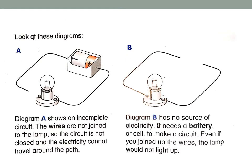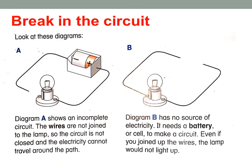Look at this diagram. In picture A, I have a battery, wire, and light bulb, but the light bulb cannot light. Because there is a break in the circuit — the wire is cut in picture A. This is an incomplete circuit. The electricity cannot travel through the path, cannot enter the light bulb; it will stop. So the light bulb will not light.